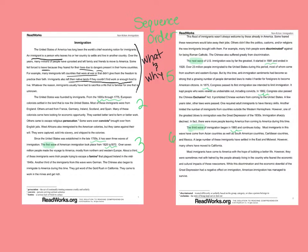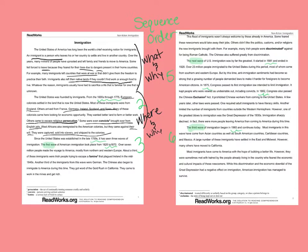Then paragraph two is about where they came from — talking about coming from Europe, England, and other countries. And again, it gives us more information about why: escaping persecution, convicts from jails, and some that came against their will who were captured. So again, that's more descriptive.